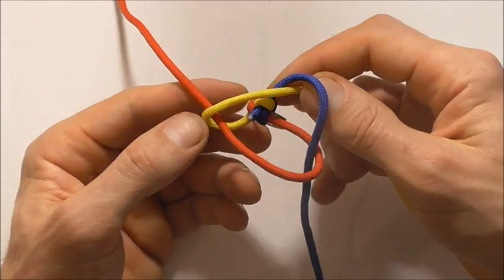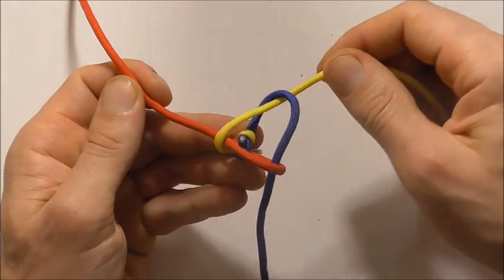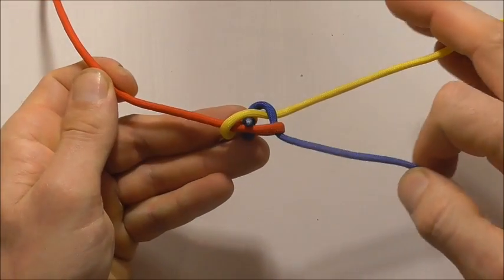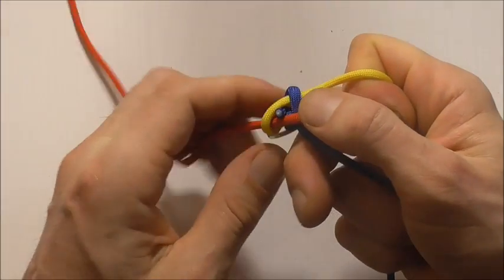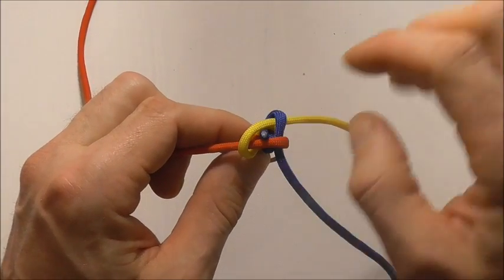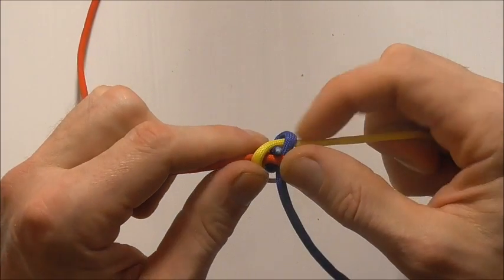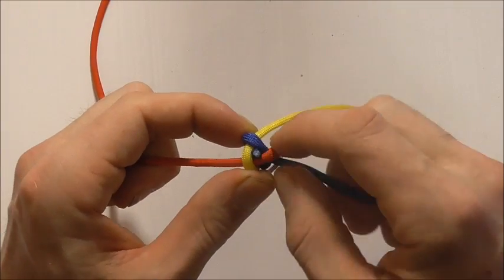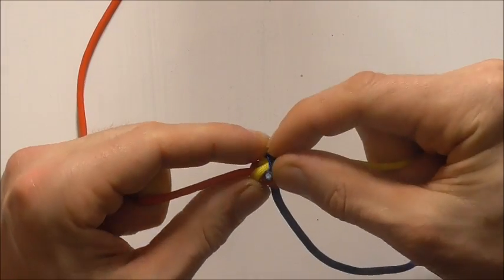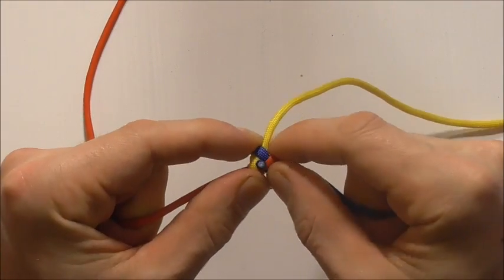So that is our second set of crowning and careful as you tighten it up again we want to trap that tag end right in the centre of the crown knot. So eventually that is going to get completely hidden.